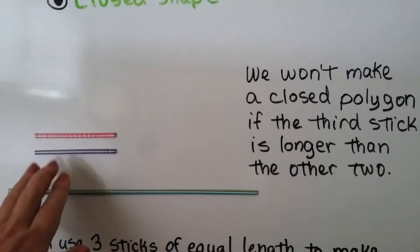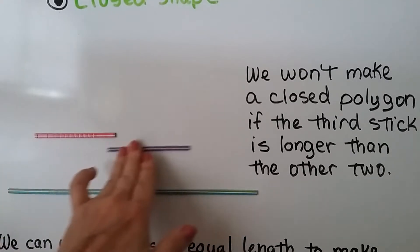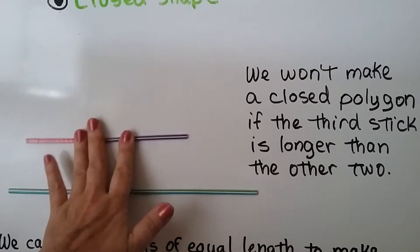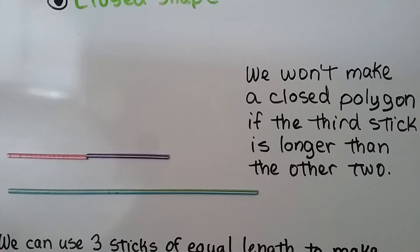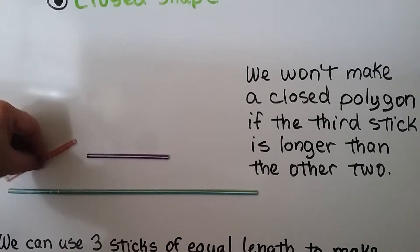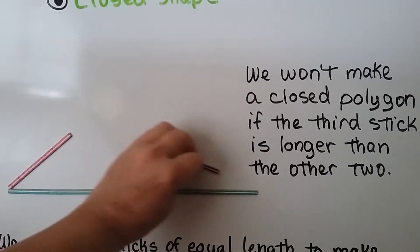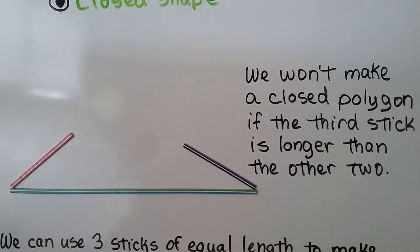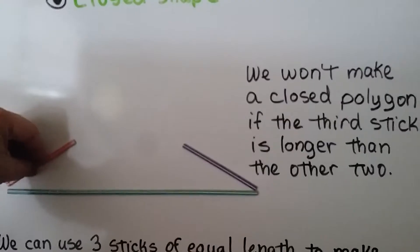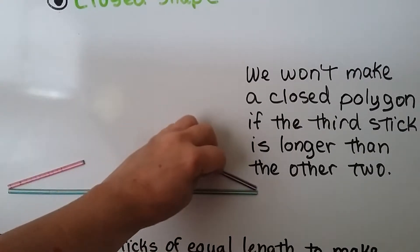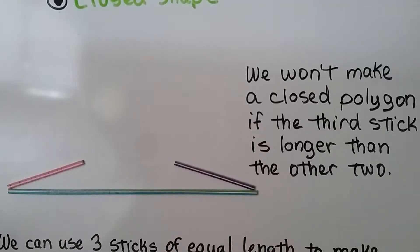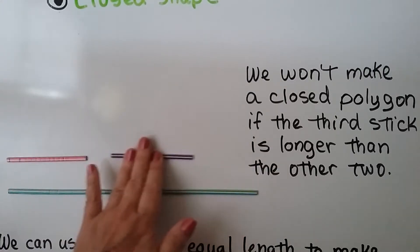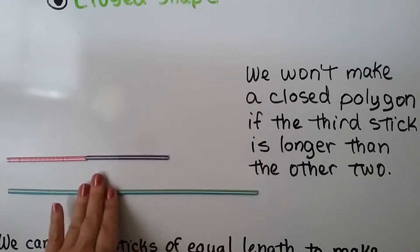If we put the two equal length sticks together and they're not longer than the third stick, it won't make a triangle. We won't make a closed polygon if the third stick is longer than the other two, and no matter how much we lean it down to try to make it close, they won't meet. So these two together would need to be longer than this one.